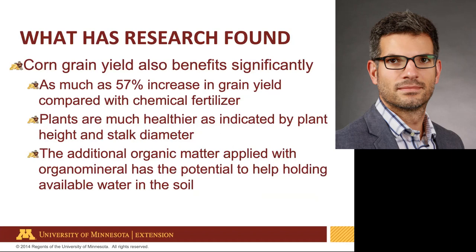For corn, the yield increases are substantial. Some studies have found as much as 57% more yield when using organic mineral fertilizer compared to chemical fertilizers alone. Researchers have also reported that plants are much healthier — taller plants with a much thicker stock, which helps in the case of high winds, especially near harvest when the plant is drying. A thicker stem diameter improves tolerance to wind damage and crop lodging.